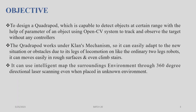We are going to see the objective. To design a quadruped robot which is capable of detecting objects at a certain range with the help of parameters of an object using an OpenCV system to track and observe the target without any controllers.